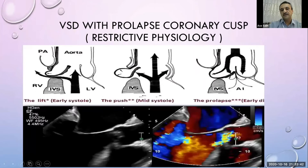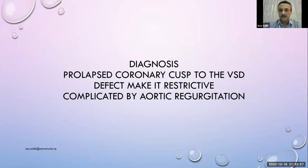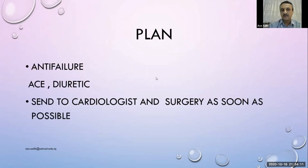On color Doppler, there is aortic regurgitation. When palpating the radial pulse, a wide pulse pressure is found — that is the mechanism. The diagnosis is prolapsed coronary cusp into the VSD making it appear restrictive, complicated by aortic regurgitation. The plan is anti-failure medication including ACE inhibitors and diuretics, then referral for cardiology and cardiac surgery consultation.